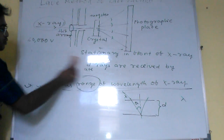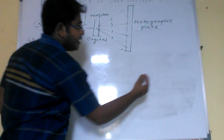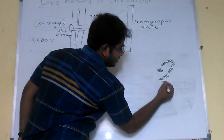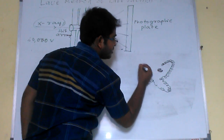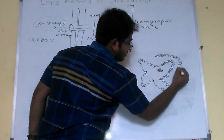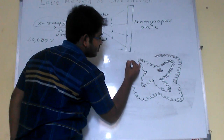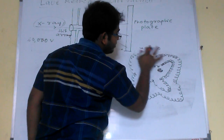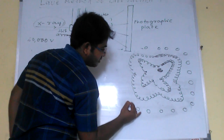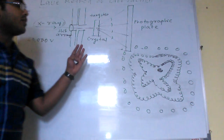When this method is used, we will get a diffraction pattern where there will be a central spot and a series of spots arranged around it. We will finally get some clear spots, and this kind of diffraction pattern will be observed for the Laue method.